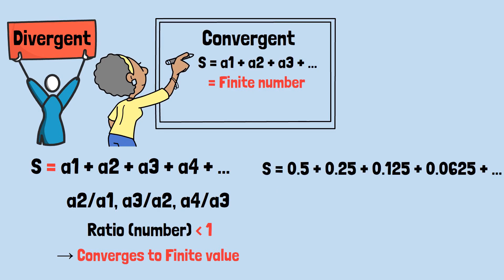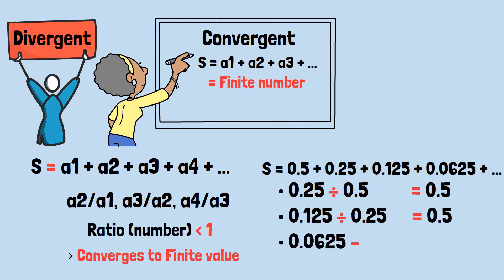In our Zeno series, 0.25 divided by 0.5 equals 0.5, 0.125 divided by 0.25 equals 0.5, 0.0625 divided by 0.125 equals 0.5. The ratio is consistently 0.5, which is less than one, so our series converges. Zeno's paradox reveals something profound about the nature of reality itself.